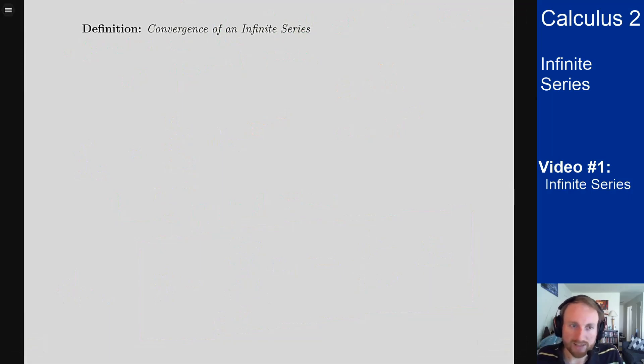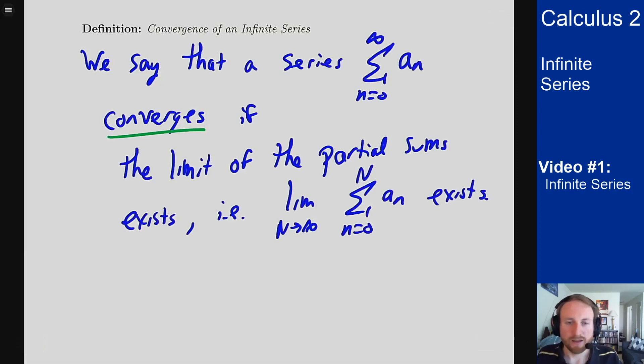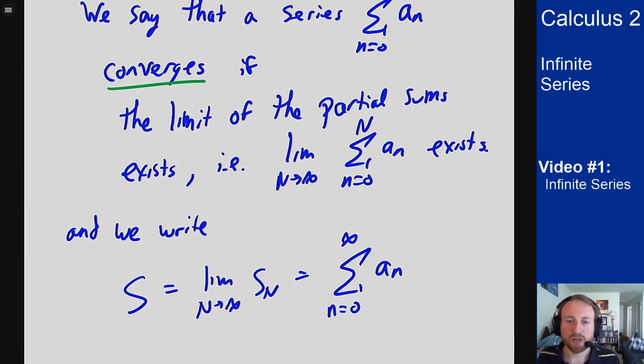So since we involved a limit before, we obviously have the issue of does this limit exist? Does this limit converge to something? And if so, what do we say about the series? So we say that a series converges if the limit of partial sums exists. And then if it converges, we can then write that whatever it is, whatever it converges to, equals the series with infinity at the upper endpoint. So the only way you can actually write infinity at the upper endpoint and do something with it is if the series converges.